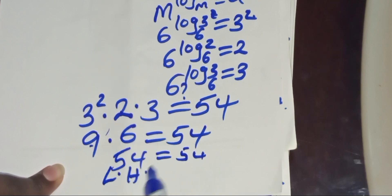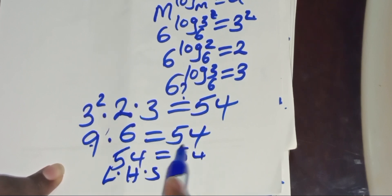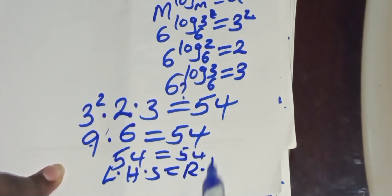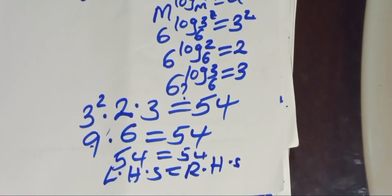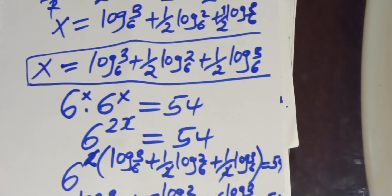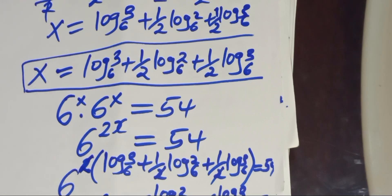So the left-hand side equals the right-hand side, which affirms that the value of x equals log₆(3) plus one-half·log₆(2) plus one-half·log₆(3) actually satisfies the equation. Kindly follow the steps, like this video and subscribe. See you in the next video, bye bye.